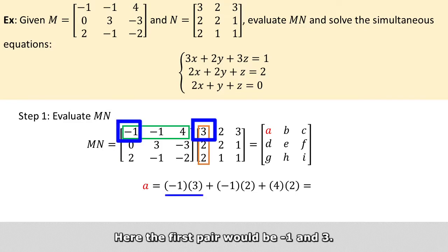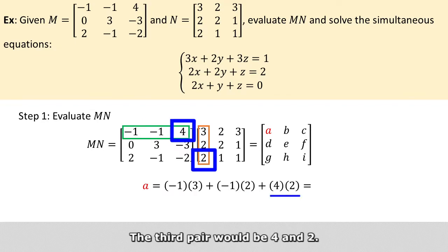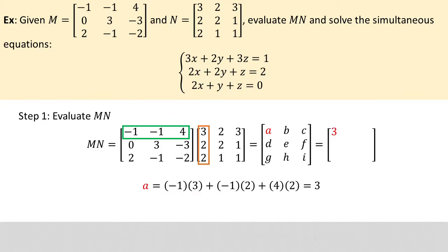Here the first pair will be -1 and 3, the second pair will be -1 and 2, and the third pair will be 4 and 2. Adding up the products, we get A equals 3.